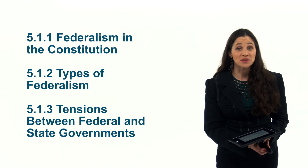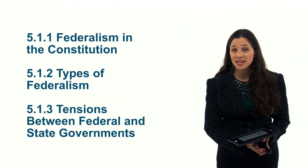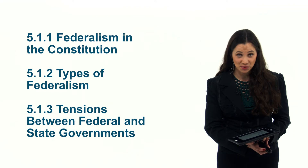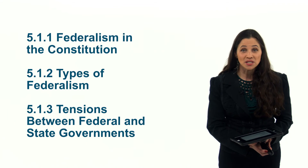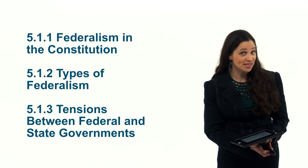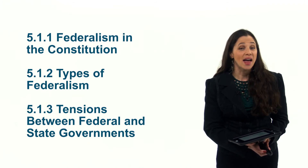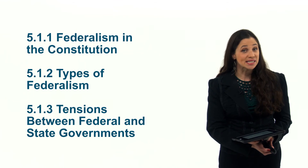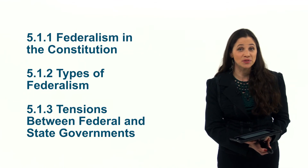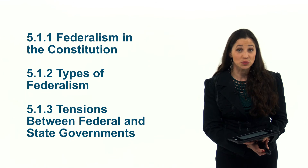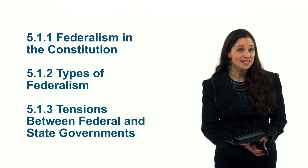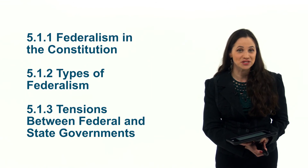The power struggle between the federal government and the states began right after the Bill of Rights was ratified in December of 1791. While the Bill of Rights is discussed in module two, this section will explain federalism in the Constitution, and will explain the distinctions between the types of federalism before the Civil War, and then those after: dual federalism, cooperative federalism, and new federalism.